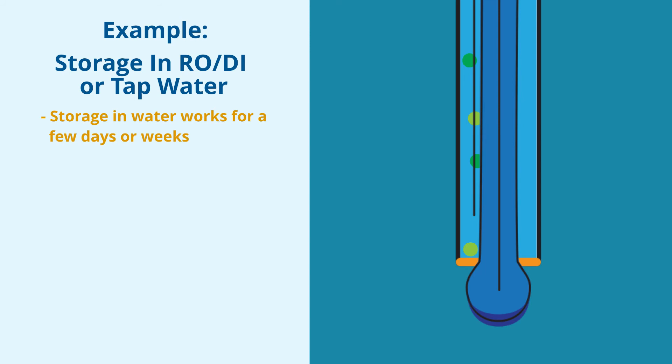When left in water, the gel stays wet, but the potassium and chloride ions in the electrolyte slowly diffuse through the junction to reach ionic equilibrium with the water. This also happens anytime the sensor is in use, so storing the electrode in water is essentially reducing the lifespan of the electrode by however long it's in storage.